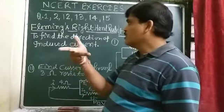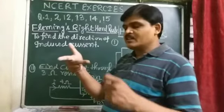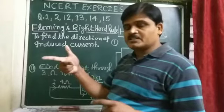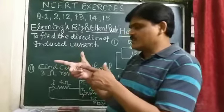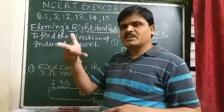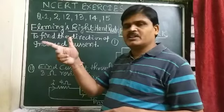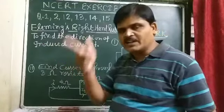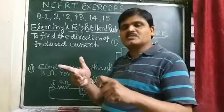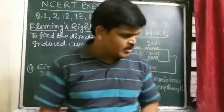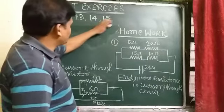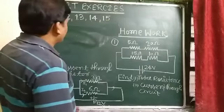To find the direction of induced current, we use Fleming's right hand rule, which can be stated as: if we stretch our right hand's first three fingers mutually perpendicular to each other, then the four finger points the direction of the magnetic field, the thumb gives the direction of the motion of the conductor, and the central finger gives the direction of the induced current. This induced current is maximum when the direction of motion of the coil is perpendicular to the direction of the magnetic field.